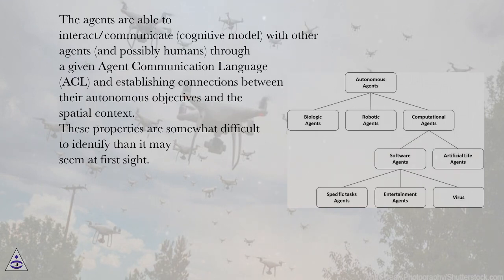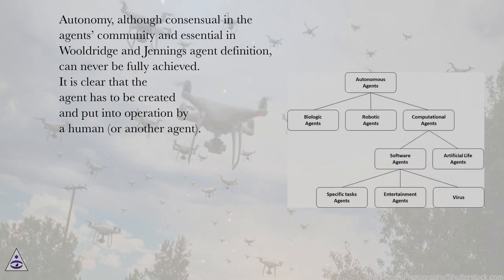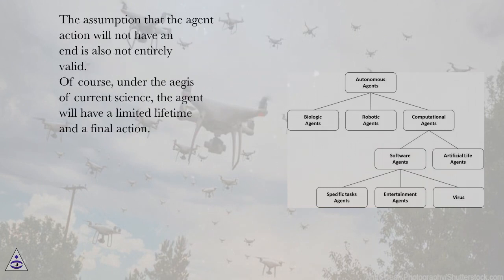These properties are somewhat more difficult to identify than it may seem at first sight. Autonomy, although consensual in the agent community and essential in Woolridge and Jennings' agent definition, can never be fully achieved. It is clear that the agent has to be created and put into operation by a human or another agent. The assumption that the agent's action will not have an end is also not entirely valid. Under the aegis of current science, the agent will have a limited lifetime and a final action.